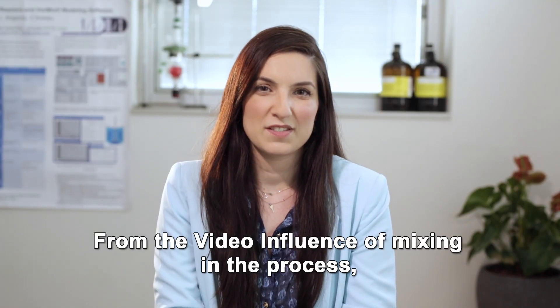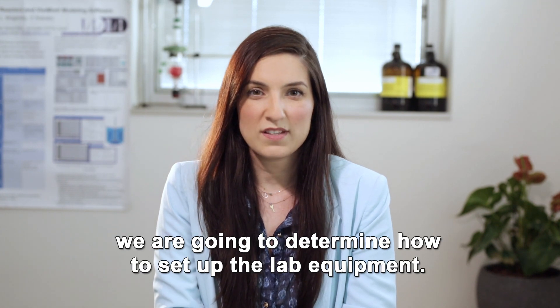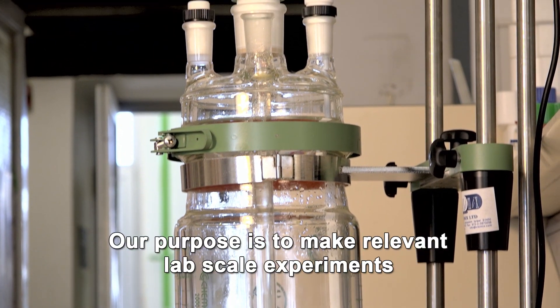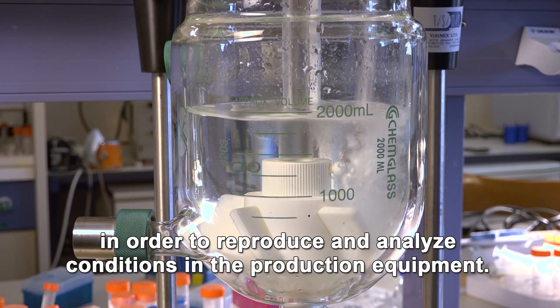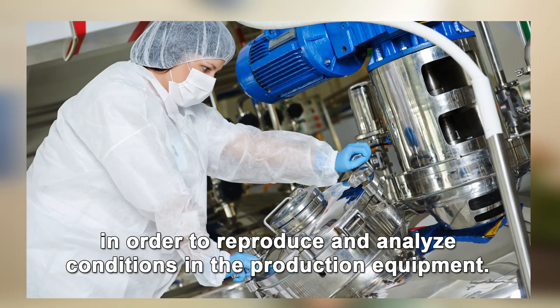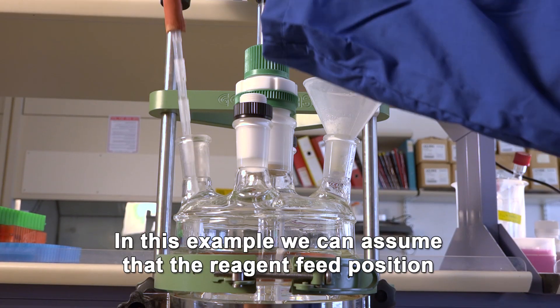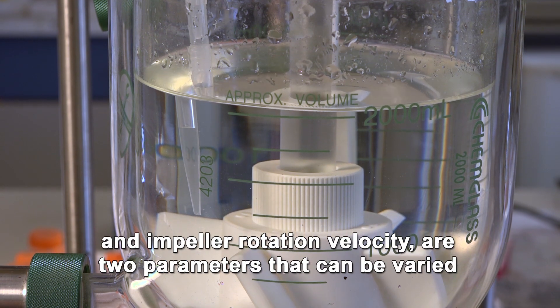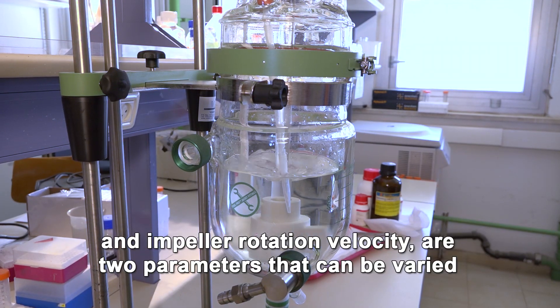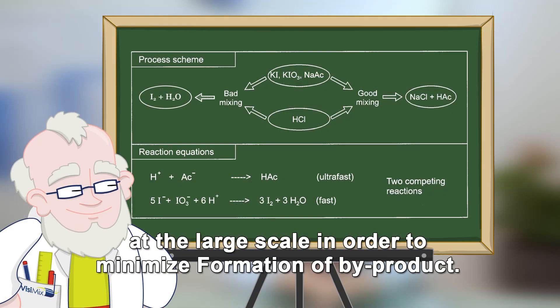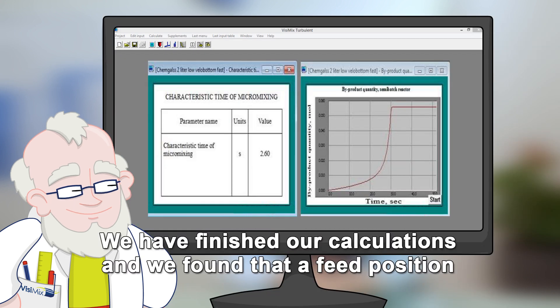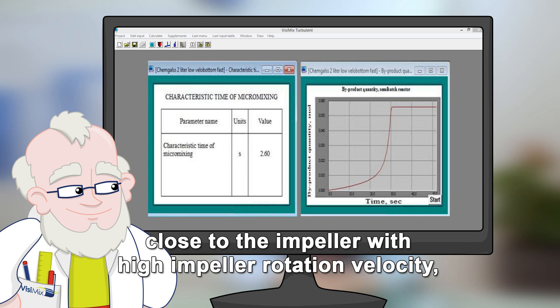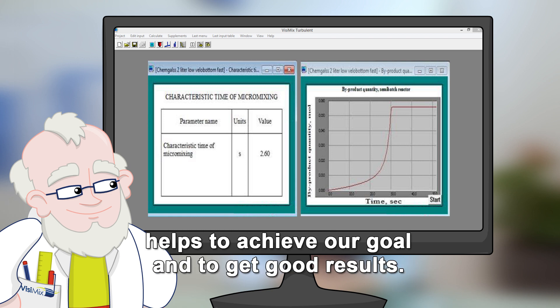From the video Influence of Mixing in the Process, we're going to determine how to set up the lab equipment. Our purpose is to make relevant lab scale experiments in order to reproduce and analyze conditions in the production equipment. In this example, we can assume that the reagent feed position and impeller rotation velocity are two parameters that can be varied at the large scale in order to minimize formation of by-product. We have finished our calculations and we found that the feed position close to the impeller with a high impeller rotation velocity helps to achieve our goal and to get good results.